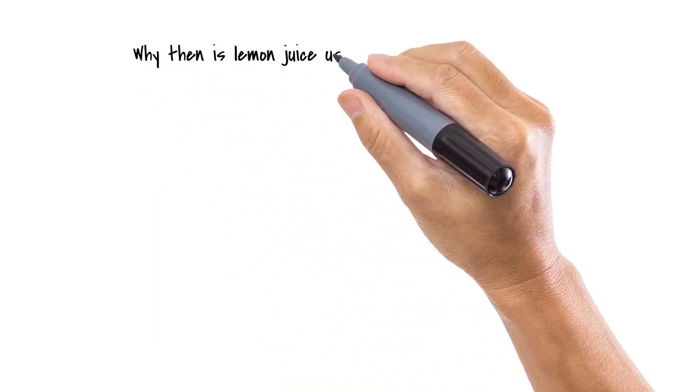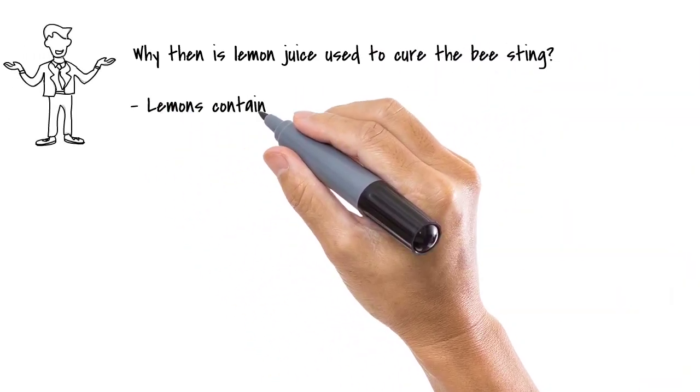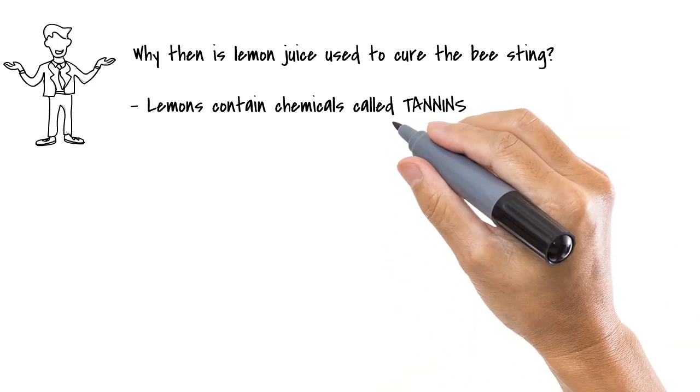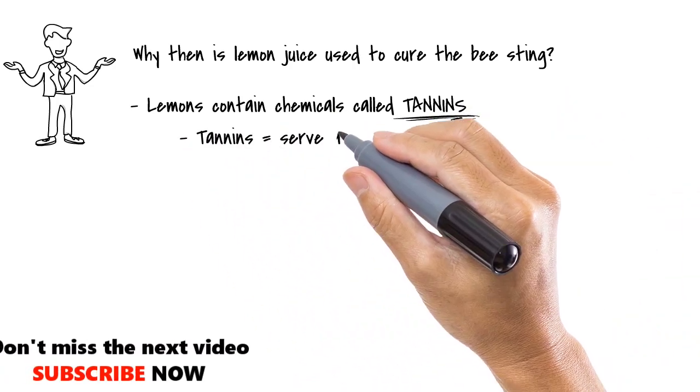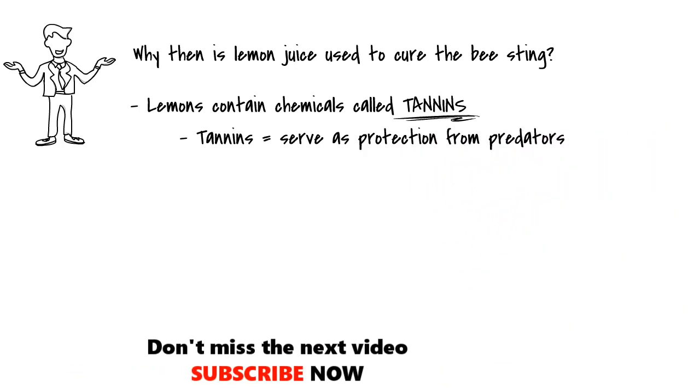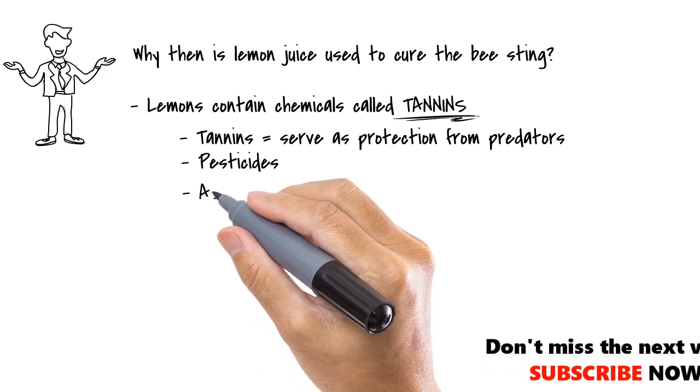Now then, why is lemon juice used to cure these bee stings? Lemons contain special chemicals called tannins. These tannins in many species of plants serve as protection from predators. They are used as pesticides too. But more importantly, tannins are astringents.